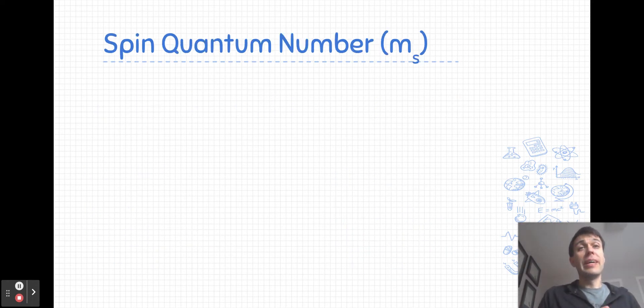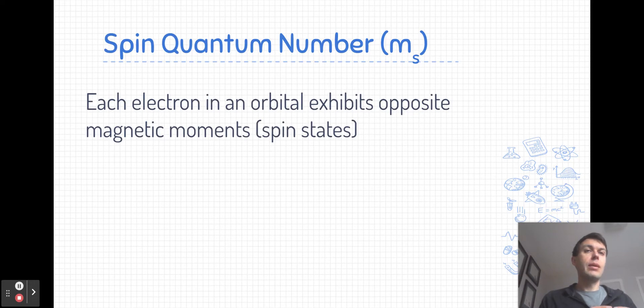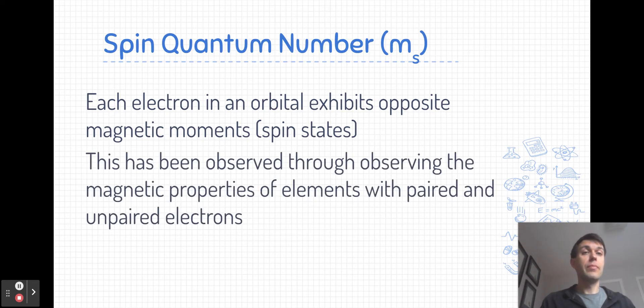The final quantum number here is the spin quantum number, m subscript s. Each electron in an orbital exhibits what's called a magnetic moment or a spin state. Specifically, every electron within the same orbital is going to have an opposite magnetic moment. The experimental evidence for this is by looking at the magnetic properties of elements that have paired and unpaired electrons. Elements that have unpaired valence electrons exhibit unique magnetic properties due to the fact that their magnetic moments don't cancel out.